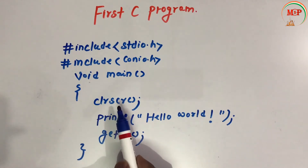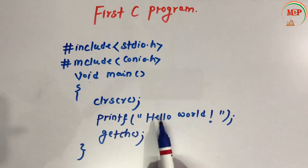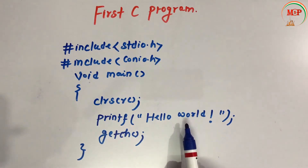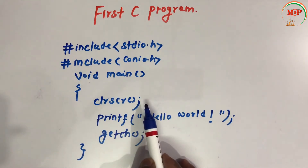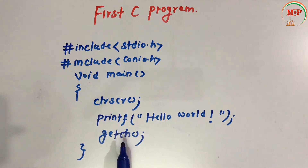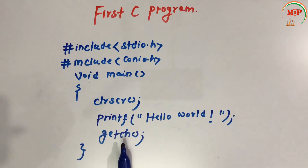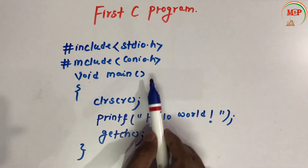printf is a predefined function. The argument inside printf is written in double inverted commas — here 'Hello World' — and it will display that as a result on the console screen. getch() means get a character from the keyboard and hold the console screen until we press any key from the keyboard. It is also terminated by a semicolon. getch() and clrscr() are defined under the conio.h header file.